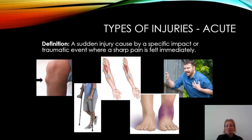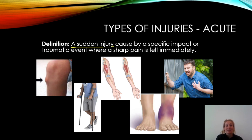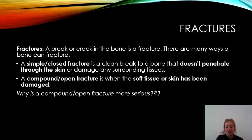Hello A-level PE students. We are looking at types of injuries today, specifically acute injuries. An acute injury is a sudden injury, whereas a chronic injury is different — that is something that occurs over a long period of time. An acute injury is something that happens suddenly, caused by an immediate event such as someone tackling you or a really sharp twist, and usually you feel that sharp pain immediately.